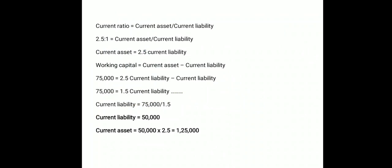Now we calculate current asset and current liability. From the current ratio: current ratio = current asset divided by current liability, so 2.5:1 means current asset = 2.5 × current liability. Working capital = current asset minus current liability = 75,000. Replacing current asset with 2.5 × current liability: 2.5CL minus CL = 75,000, so 1.5CL = 75,000.